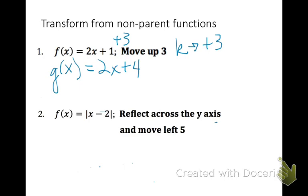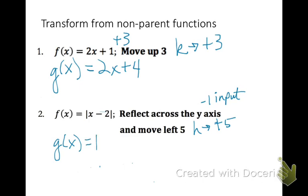With number 2, f of x equals the absolute value of x minus 2, we're going to reflect across the y-axis. Remember that you multiply negative 1 by the input only. And then move left 5 — that's an h value, but we do the opposite and add 5. So our new function g of x equals the absolute value of negative 1 times x minus 2, plus 5. Finally, g of x equals the absolute value of negative x plus 3.